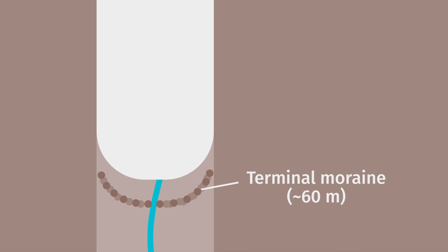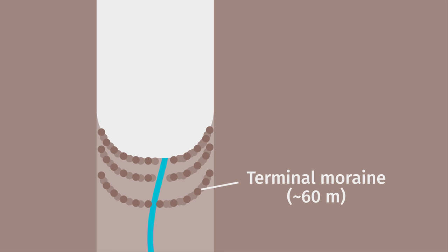Oftentimes, glacial retreat is not linear. A retreating glacier may speed up, slow down, stop, or even advance, depending on how hot or cold the climate was at any given time. If the glacier repeatedly halted during its retreat, a series of end moraines called recessional moraines will form behind the terminal moraine.